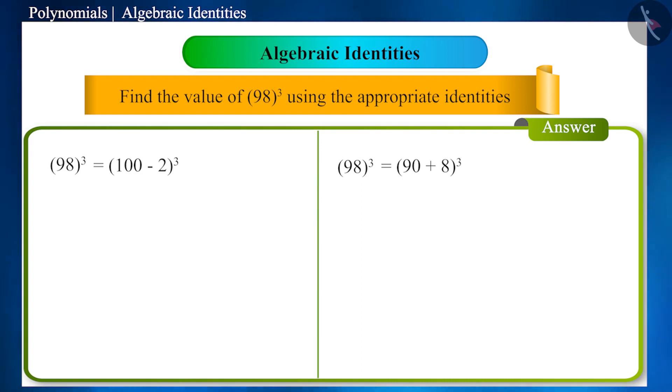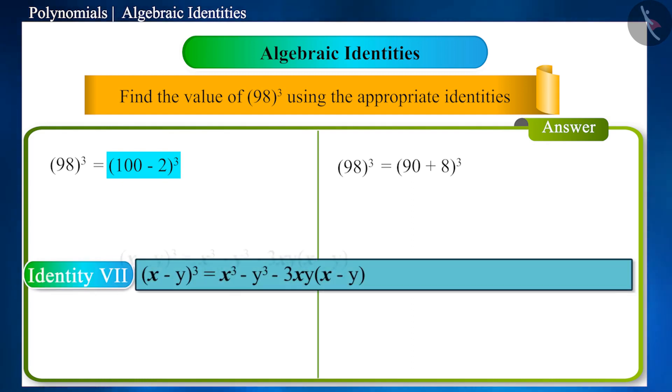When we write it as 100 minus 2 to the power of 3, then the identity x minus y to the power of 3 is used.